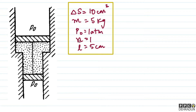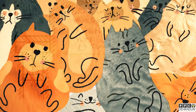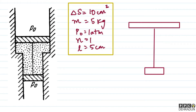So basically, what we have is ideal gas in the middle, and we need to find by how much temperature is raised such that the piston combination shifts by 5 centimeters.